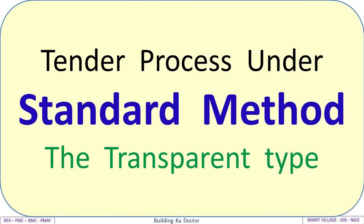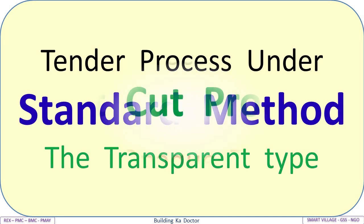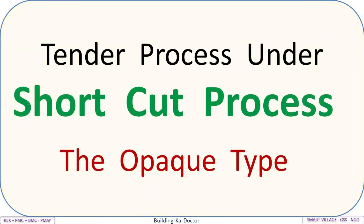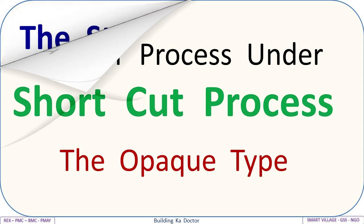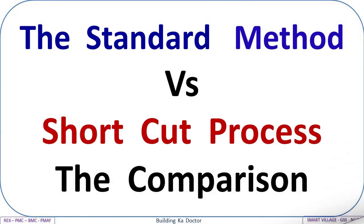Under the standard method, the tender process is transparent. Under the shortcut process, it is opaque. Here is a detailed comparison of the standard method versus the shortcut process.